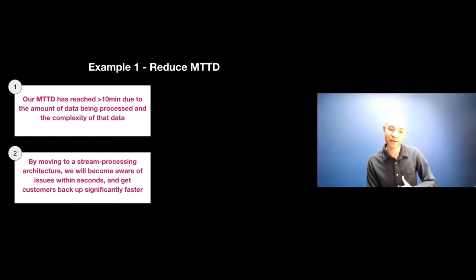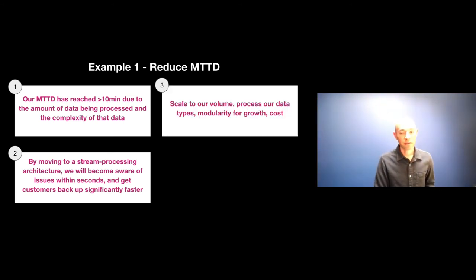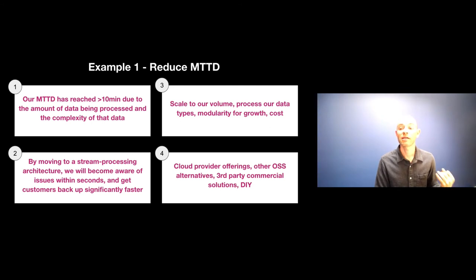Essentially, because they had so much data coming in, their systems weren't able to keep up with that to alert teams to understand what was going on or if they even had an issue. And so if we deliver a solution, the outcome needs to be to improve that. And so by moving to a stream processing architecture, we'll become aware of issues within seconds and get customers back up significantly faster. So we jumped through three layers there. One, the technology, which may or may not be as important at this point. The second is what will the outcome be in terms of time reduction? And the third is who is going to be impacted the most? The customers, the people that pay our bills. Now, what were the design principles?